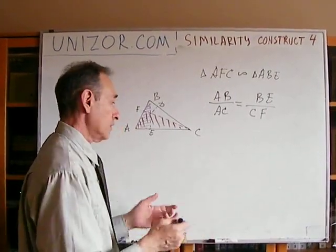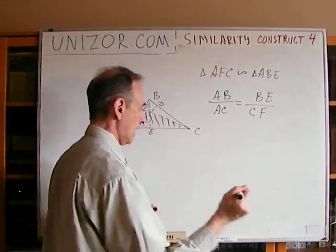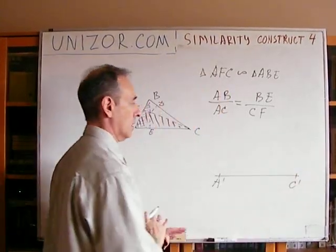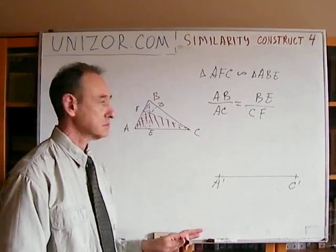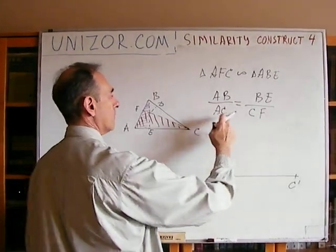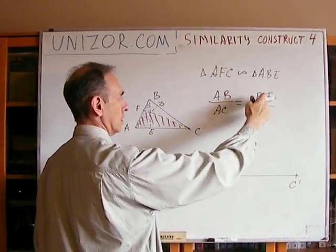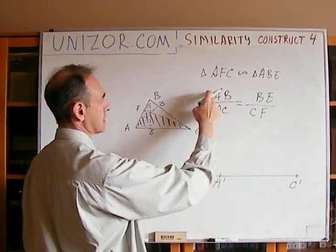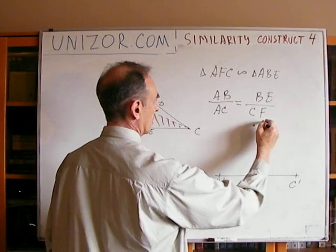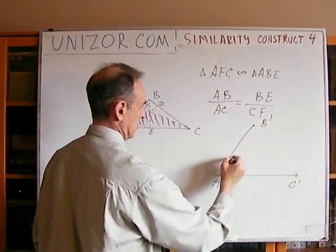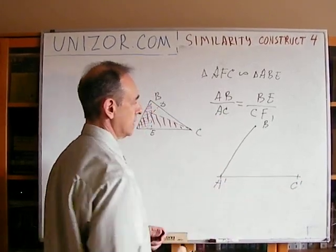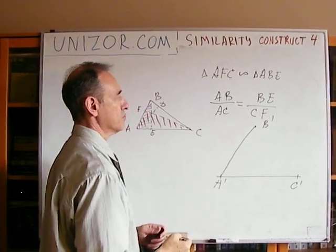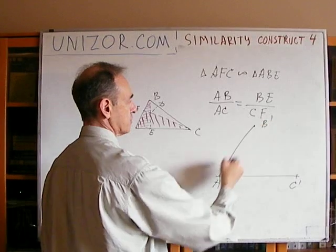How can I do it? Very simply. Start with segment A'C' — any segment I want. Since I know that the ratio between two known altitudes equals the ratio of A'B' to A'C', I can find A'B'. I can determine the length of this segment.